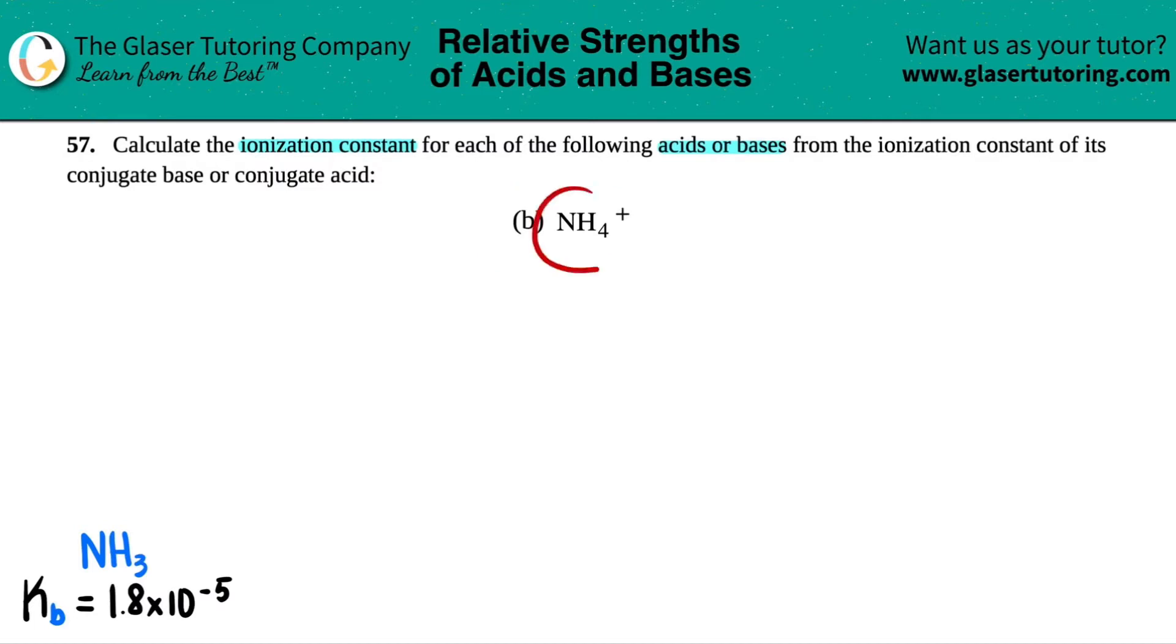So in this case we have NH4+ and we want to find the ionization constant for that. But the first thing is, is NH4 plus an acid or a base? Well, generally if you see a positive sign, that means that you're dealing with an acid. So if we're dealing with an acid, we want to solve for the Ka value. A for acid.